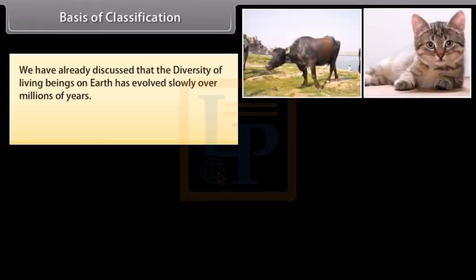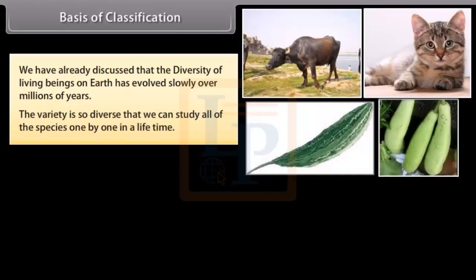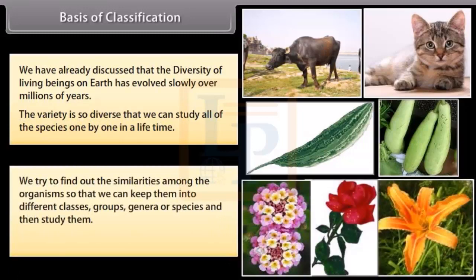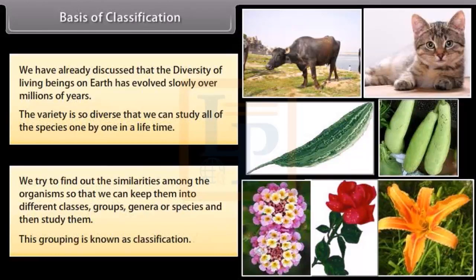We have already discussed that the diversity of living beings on earth has evolved slowly over millions of years. The variety is so diverse that we cannot study all of the species one by one in a lifetime. So we try to find out the similarities among the organisms so that we can keep them into different classes, groups, genera, or species, and then study them. This grouping is known as classification.